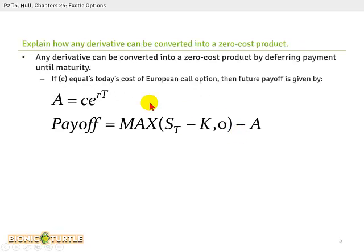John Hull introduces the notion that any derivative can be converted into a zero-cost product simply by deferring the payment.